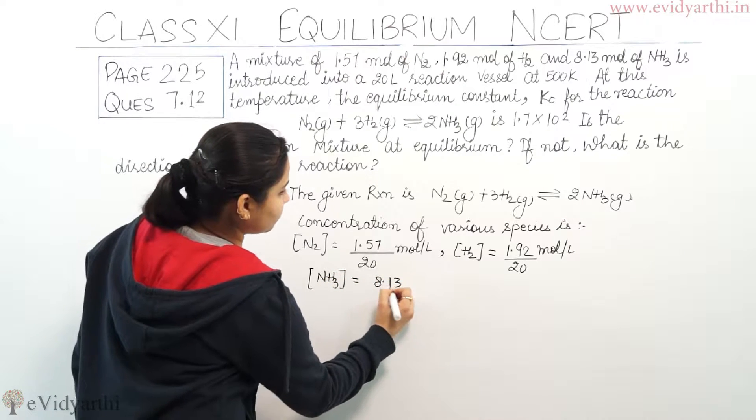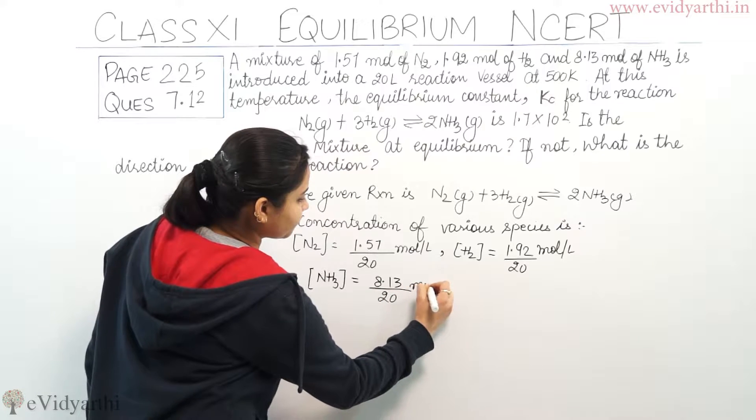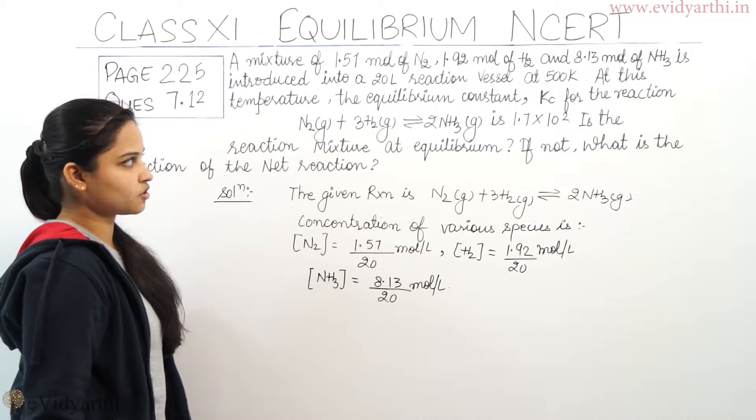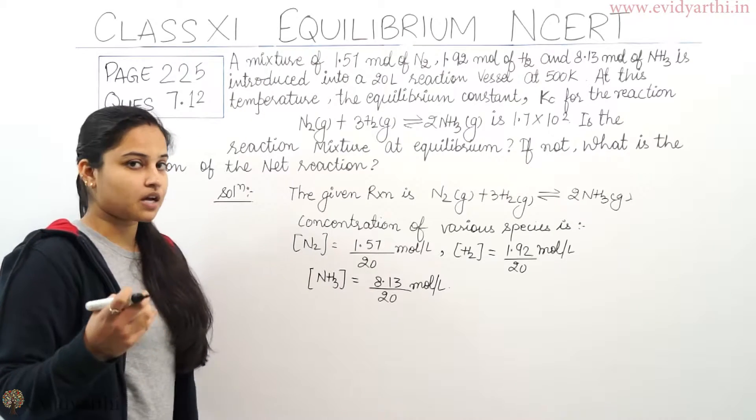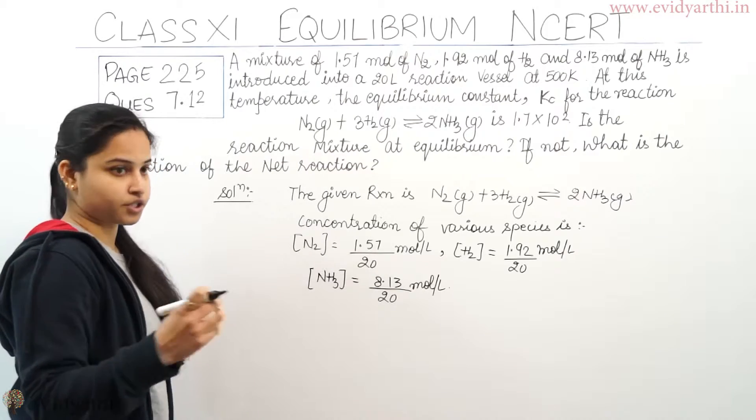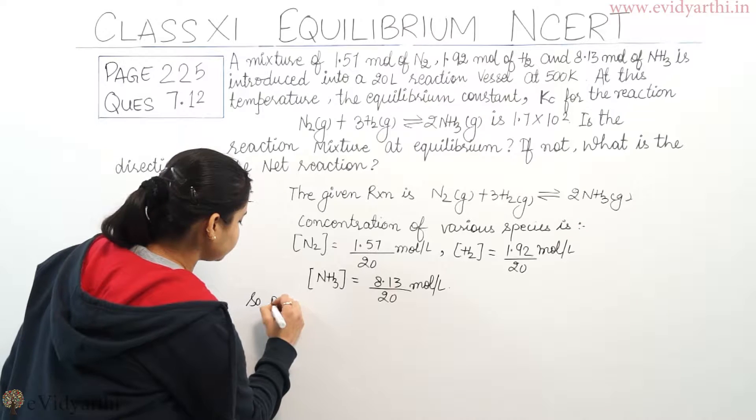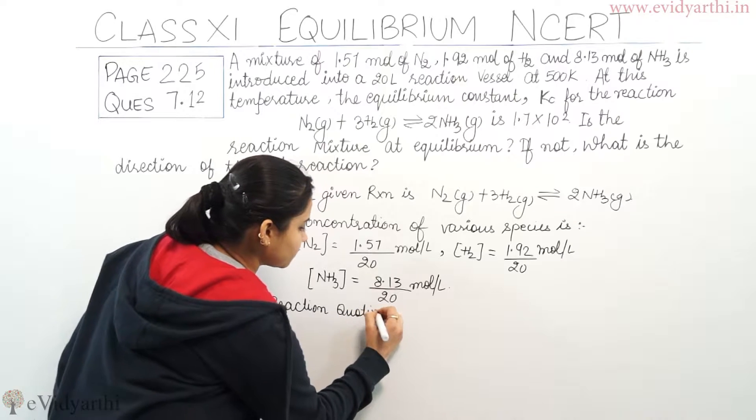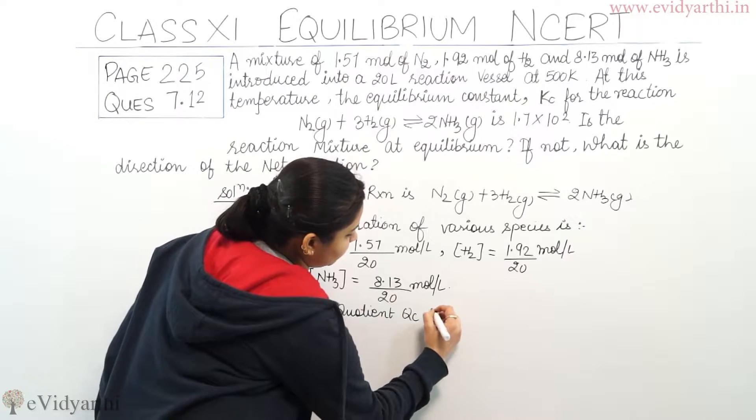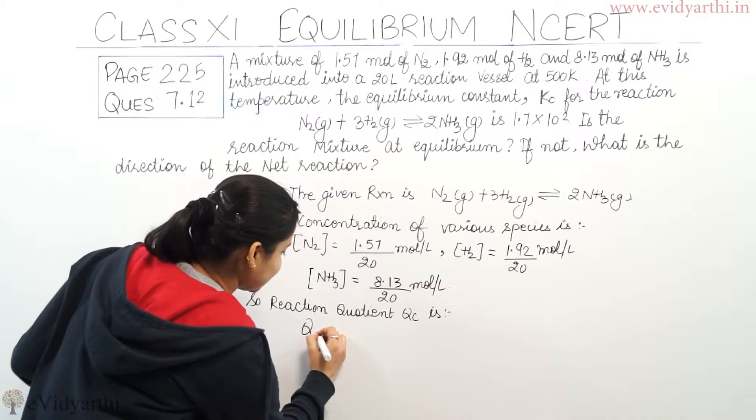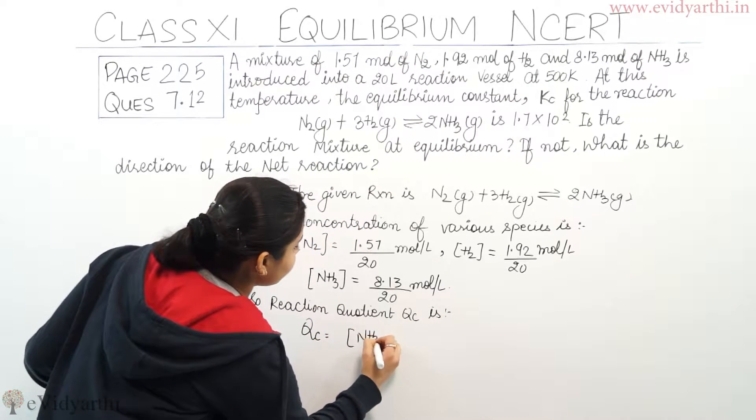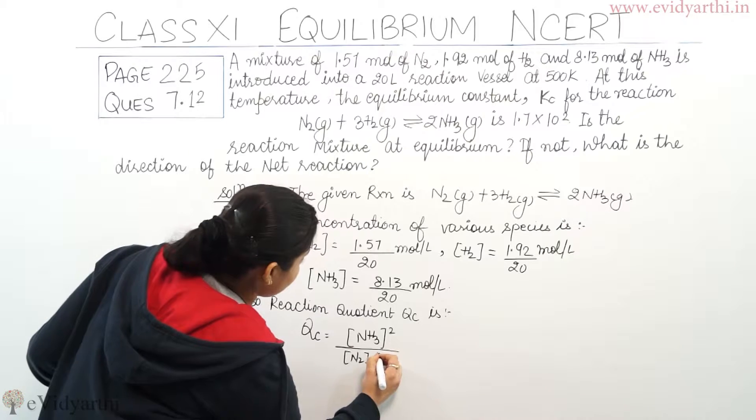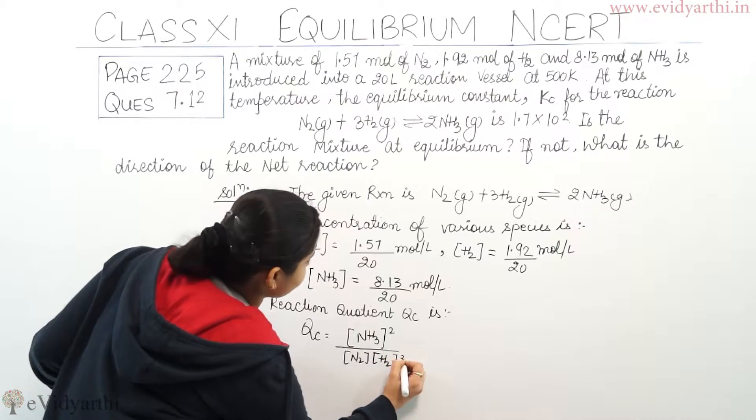And concentration of NH3 is 8.13 divided by 20 mol per litre. So these are the concentration of various species which is given in the equation. Now, we will move for calculating out the reaction quotient. So, the reaction quotient Qc is what?